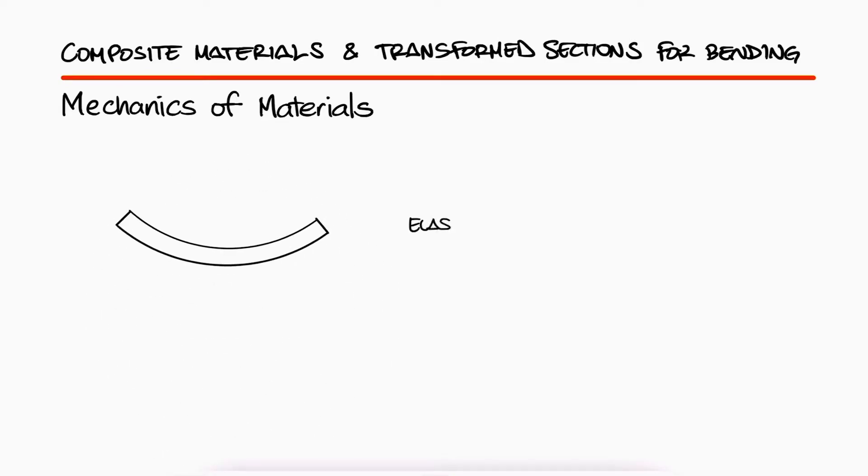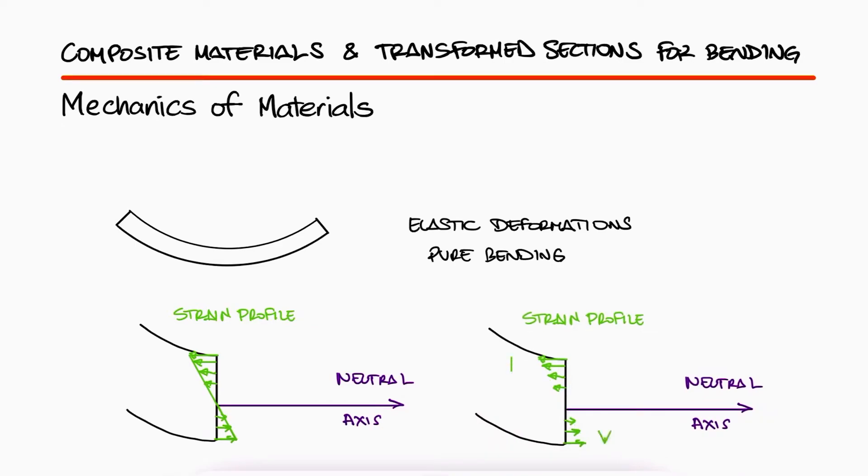For deformations due to pure bending that are within the elastic region, we see that the strain increases linearly from zero at the neutral axis. We'll later study how plastic deformation for bending originates at the planes farthest from the neutral axis, causing portions of the volume to undergo plastic deformation while the core is still within the elastic range, but for purely elastic deformation, this linear increase in strain is an accurate assumption.